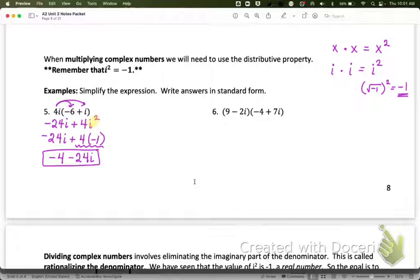So that's just distributing one term. Now on number 6, we have two terms that we have to distribute. You've seen problems like this in algebra 1 where we multiplied binomials, but maybe not with i's in them before. So we have two things we need to distribute. First, I need to distribute this positive 9. Second, I need to distribute this negative 2i.